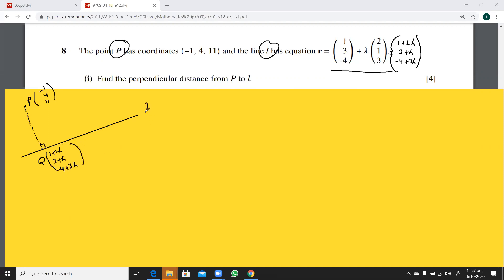Now, you will quickly find the vector PQ. So this is 1 plus 2 lambda, 3 plus lambda, minus 4 plus 3 lambda, minus, this is minus 1, 4, 11. So we have, yes, what is there in the chat? Lambda, it is lambda. This is lambda.